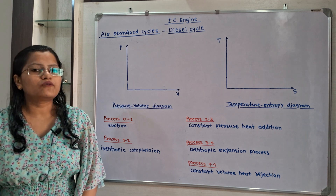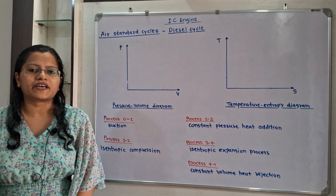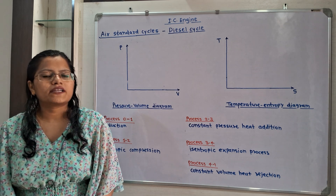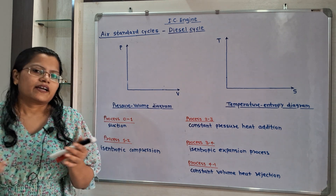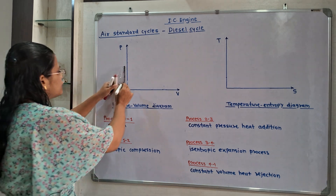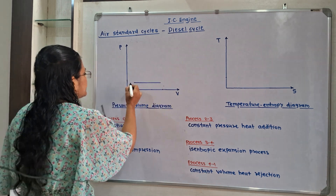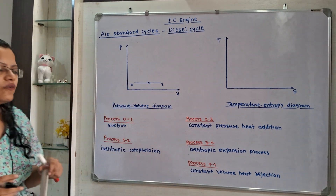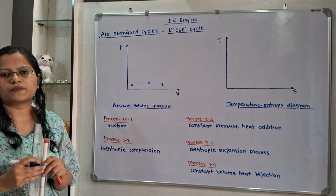Let us understand how to draw pressure, volume and temperature entropy diagrams for the diesel cycle. Process 0 to 1 is the suction process where air is getting inside the piston-cylinder arrangement. We will show this process on the pressure-volume diagram. Here is point 0 and this is point 1.